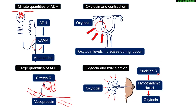With milk ejection, the process starts with the suckling reflex. This happens when the baby is suckling — stimulation of the nipples. The suckling reflex sends a message to the hypothalamic nuclei, and oxytocin is synthesized, travels down to the posterior pituitary, gets released into the blood circulation, all the way to the breast. Within the alveoli of the breast that contain the milk, it causes contraction and squeezing of the alveoli, and then milk finds its way outside through the duct to the nipple where the baby can access it.